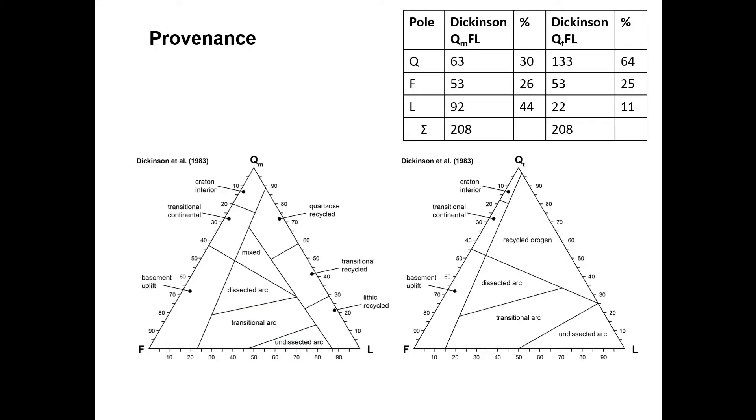Time to plot. For the QM-FL plot, we use 30% of Q, 26% of F, and 44% of L. This gives us a tectonic provenance of dissected arc.